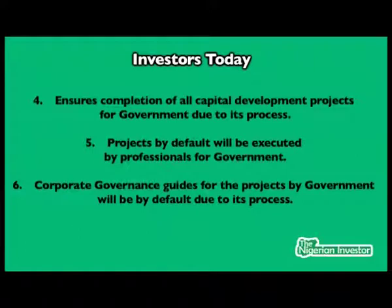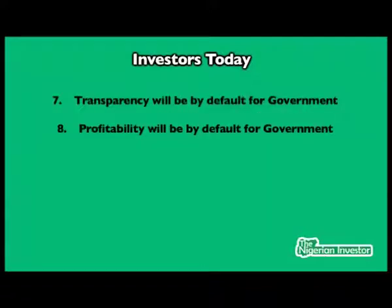Fifth, projects by default will be executed by professionals for government. Sixth, corporate governance guides for projects by government will be default due to its process. Seventh, transparency will be by default for government. Eighth, profitability will be by default for government.